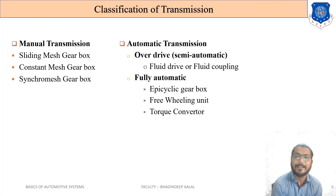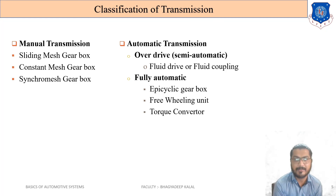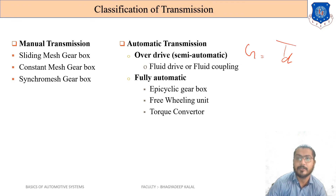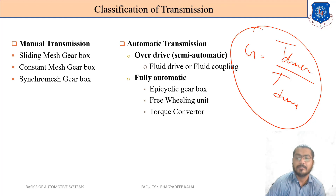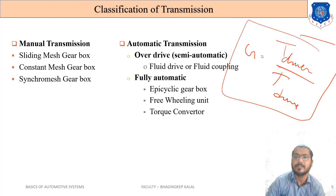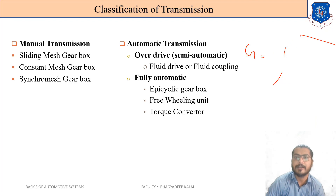The key prerequisite for understanding all these topics is the gear train chapter from previous semesters — specifically gear ratio. Gear ratio is the teeth of the driver divided by the teeth of the driven gear, which determines the speed output. The module is always the same for two meshing gears, and the gear ratio depends on speed since teeth count is linked to speed.